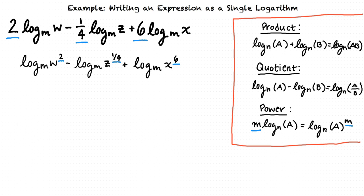Next, we will use the logarithm of a quotient property to combine some terms. Log base m of w to the power of 2 minus log base m of z to the power of 1 fourth becomes log base m of w squared over z to the 1 fourth. And our addition of log base m of x to the power of 6 must remain.